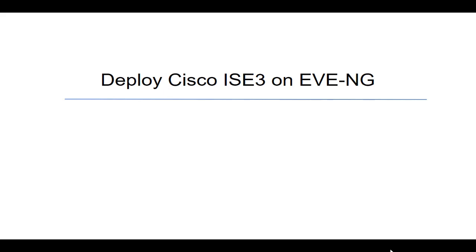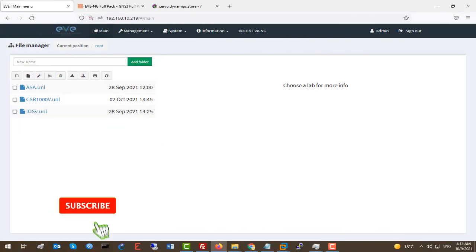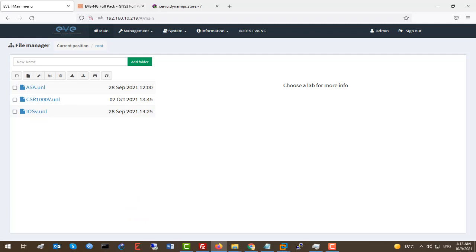In today's video I'm going to talk about how we can install or deploy Cisco ISE version 3 on Eve-NG. We're going to cover where to download the Cisco ISE QCOW2 format, how to upload Cisco ISE into Eve-NG and apply the wrapper fix permissions, and lastly we're going to create a Cisco ISE lab, install it completely, and connect to Cisco ISE from our local PC to manage the web interface. Please don't forget to subscribe to our channel, like this video, and turn on notifications.